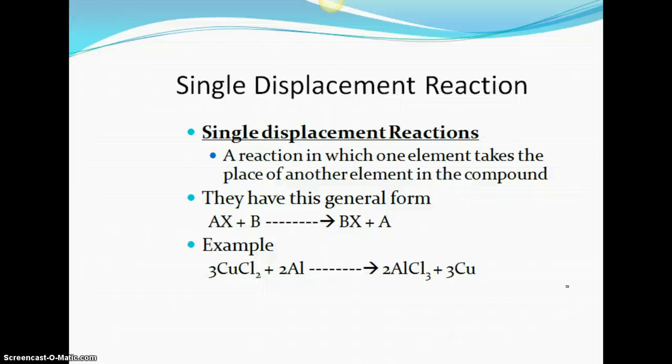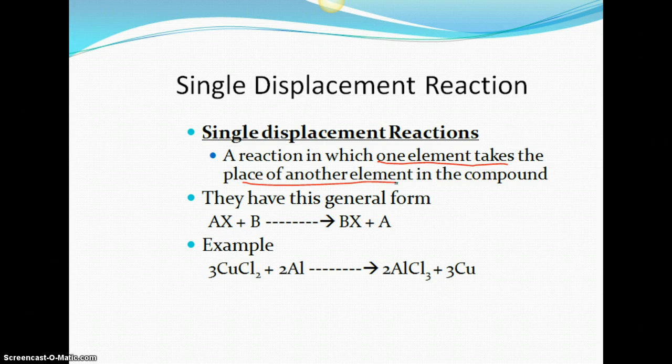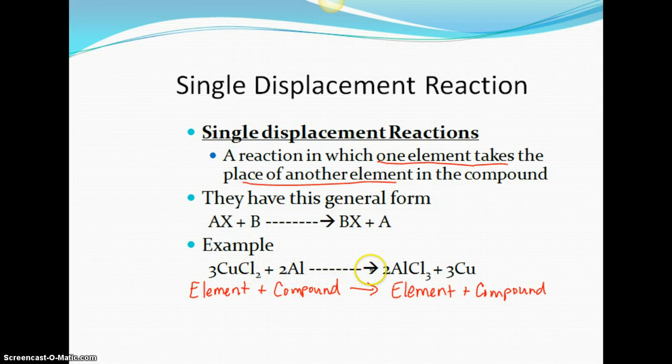Alright, the next one is single displacement reaction. And this is where one element takes the place of another element. So you can again choose which form you'd like to use, or you can do the example that I'll write in here. So on this one we would see element, there's an element by itself, plus compound produces a separate element, one of them gets separated out, plus compound. Now the thing that I often remind students is that you don't have to know what these elements and compounds are as we look across a real formula. If you just look for the simple characteristics of each side, you'll be able to identify the type of reaction.